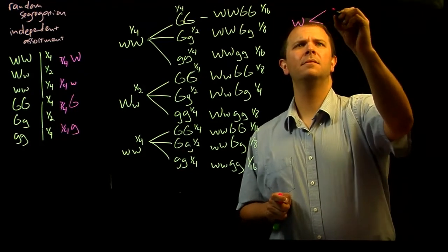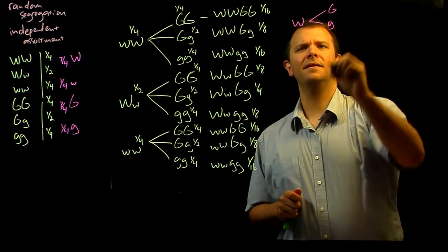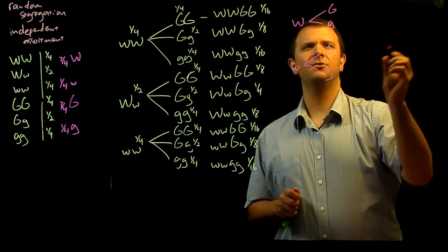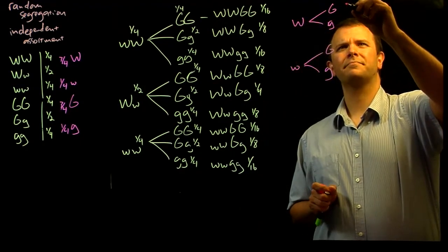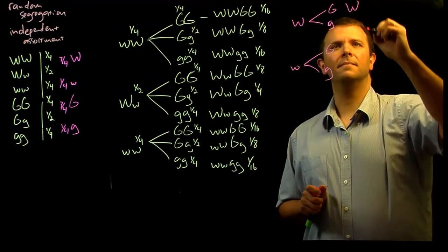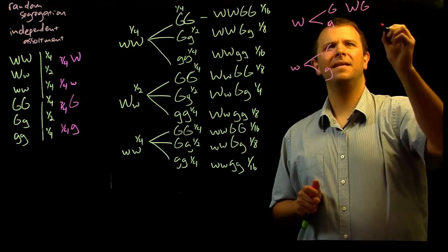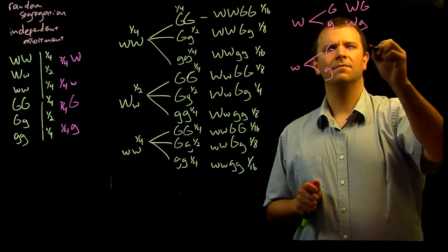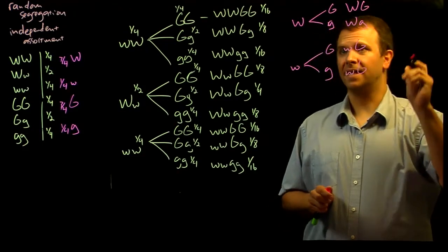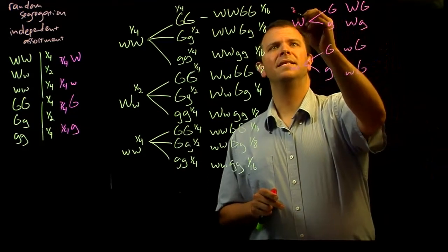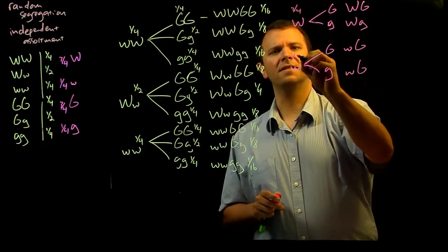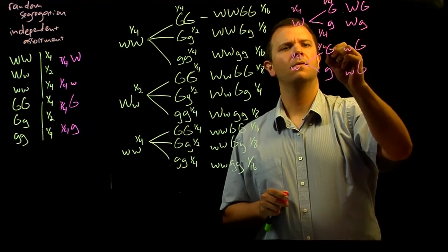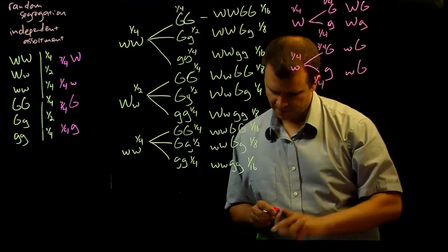So, big W, big G, and little g, and little w, big G, and little g. So, round and yellow, round and green, wrinkled and yellow, wrinkled and green. These we expect to be three quarters and one quarter, three quarters and one quarter, three quarters and one quarter.